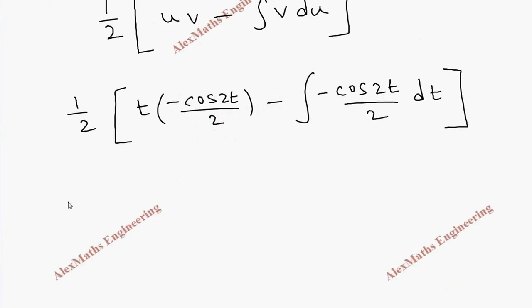Let's multiply this half inside, so we get minus t cos 2t by 4. These two minus signs cancel, we get plus 1 by 4 integral cos 2t dt.